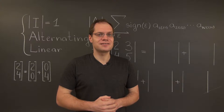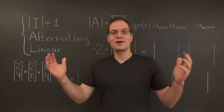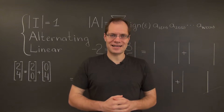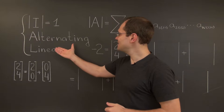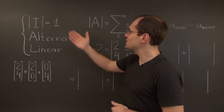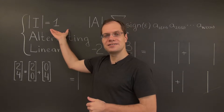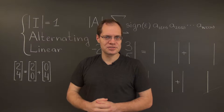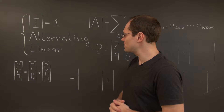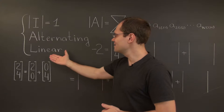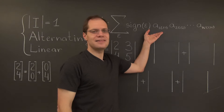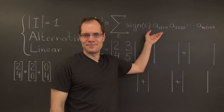I will now demonstrate the surprising and elegant fact that these basic properties — that the determinant of the identity matrix equals 1, the alternating property, and the linear property — actually imply this formula.